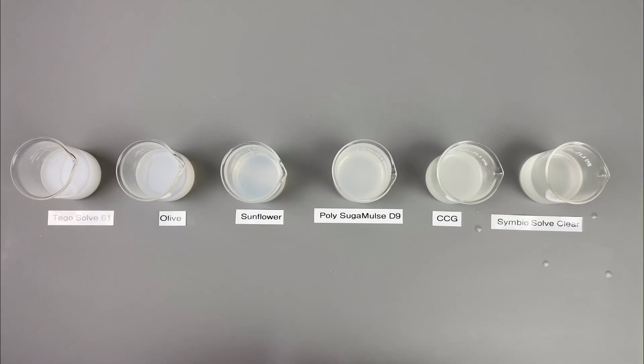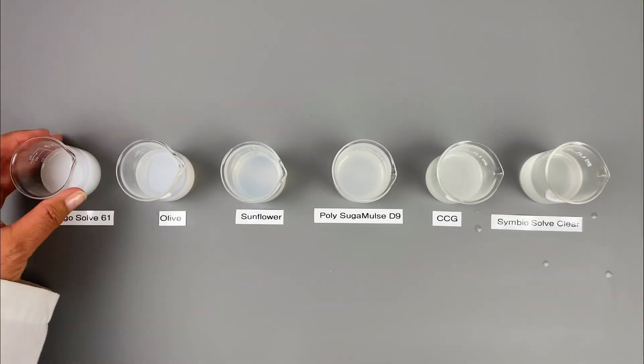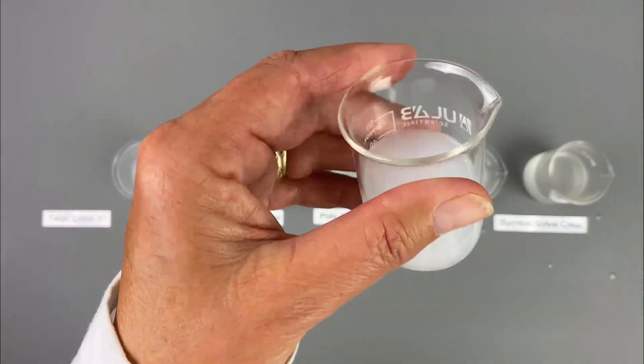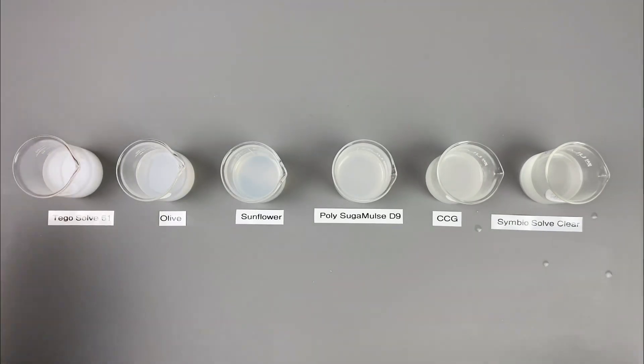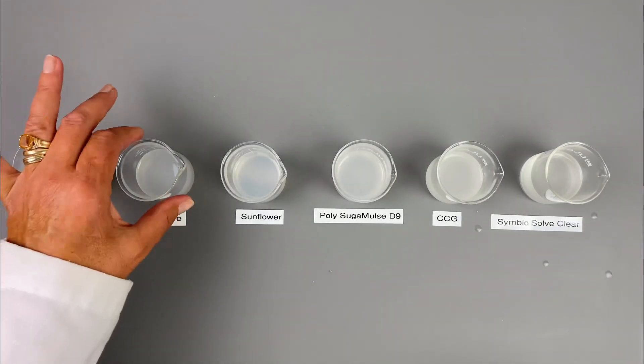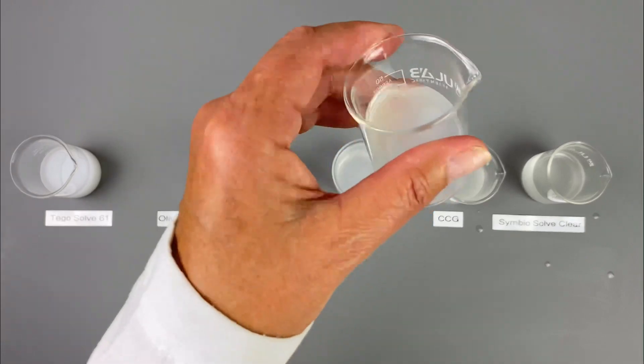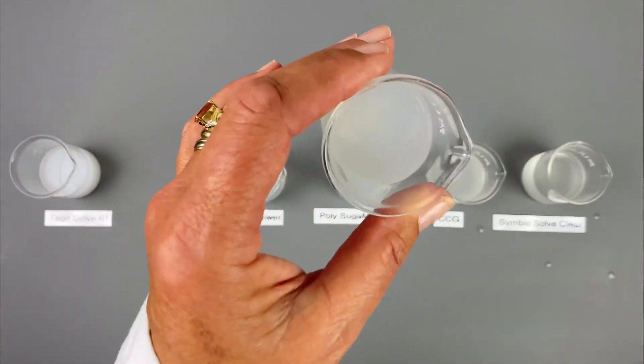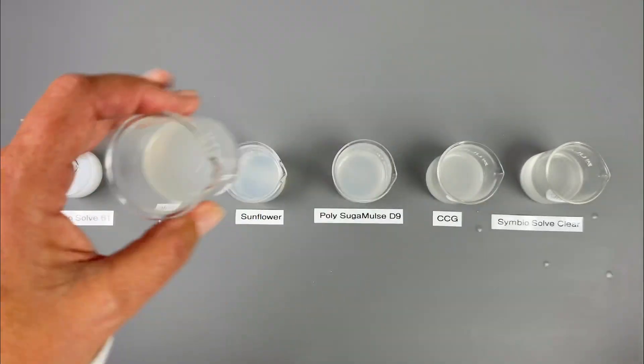Here are our test results from using the natural solubilizers. It's been almost 24 hours. The Tegosolv was warmed up and it did go into solution and it solubilized essential oils. It's the most milky white in color. The olive solubilizer is more transparent. It has a haziness to it, but it did an excellent job solubilizing essential oils.